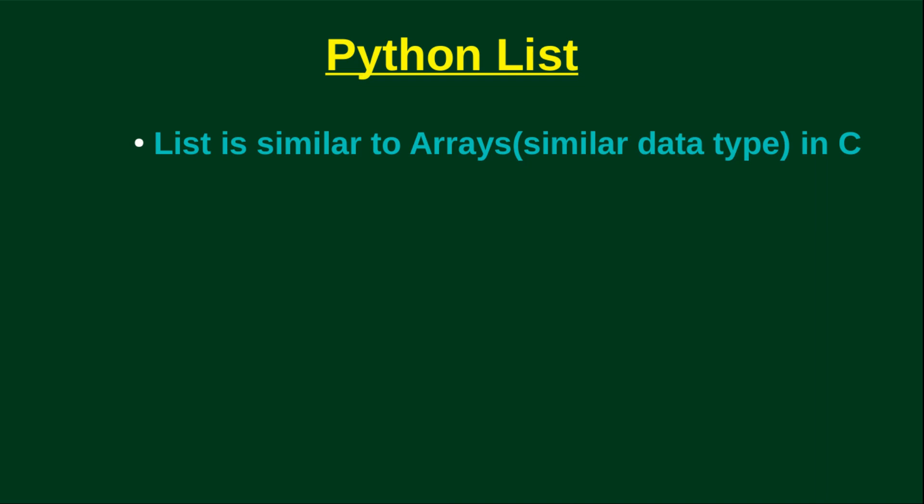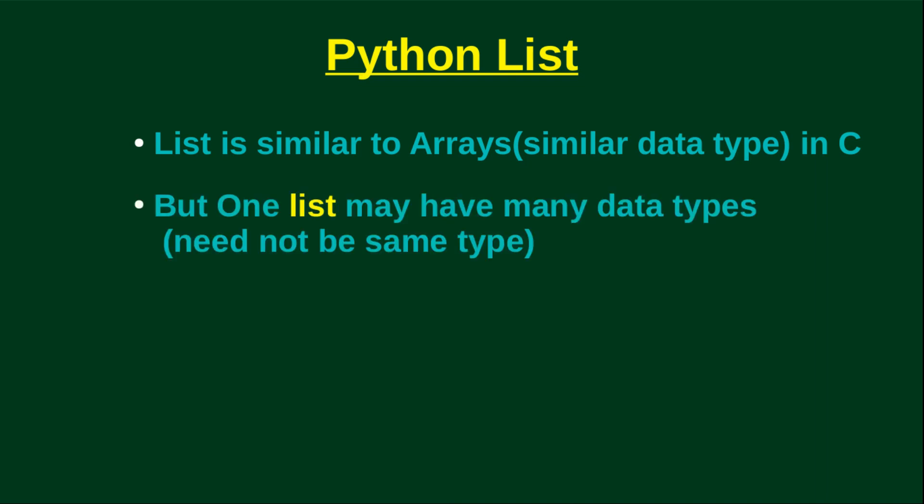In C++, we have similar data types. In Python, we have different differences — Python allows you to mix different data types in the same list.